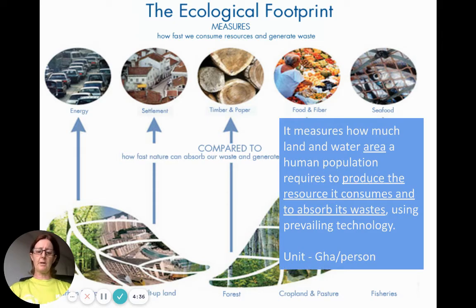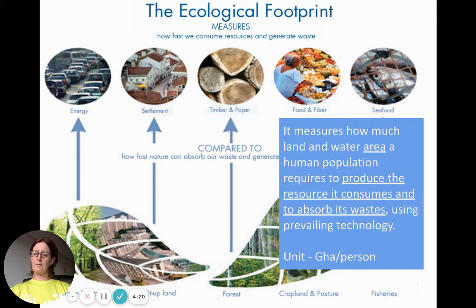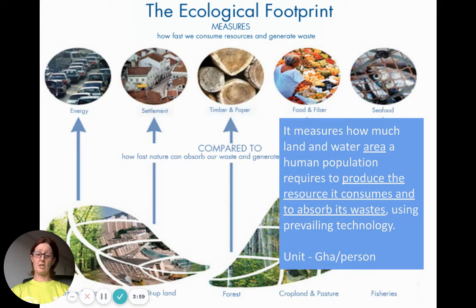There are a few things if we look at its definition, but first of all its unit. Just a reminder — it's global hectares per person, so it's an area of land and water that we need to produce the resources that we consume and also absorb the waste. That's not just physical waste; that can also be our greenhouse gas emissions, and in particular carbon dioxide. We need vegetation and plants to absorb this, given our current prevailing technology, because this changes as well.